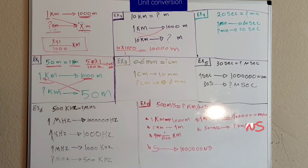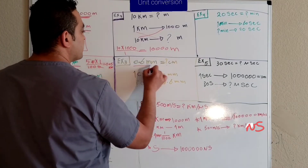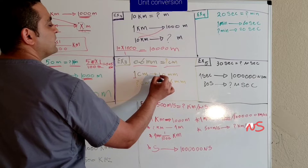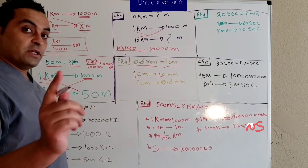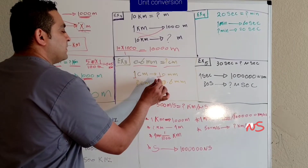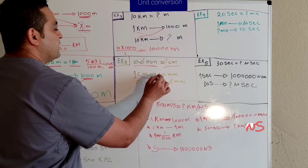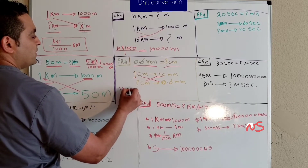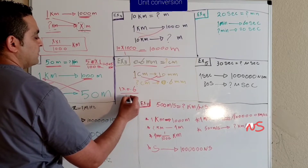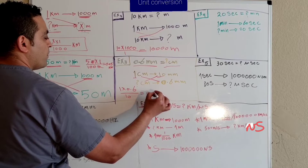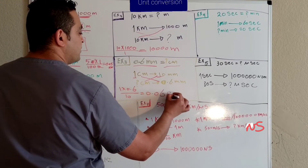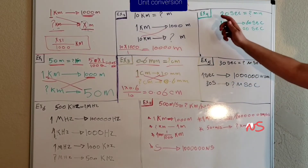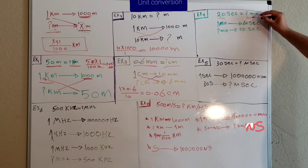Example number three: we have 0.6 millimeters and we need to convert it to centimeters. We know that one centimeter equals ten millimeters. So we multiply 0.6 by one and divide by ten — that's one times 0.6 over ten — which equals 0.06 centimeters.